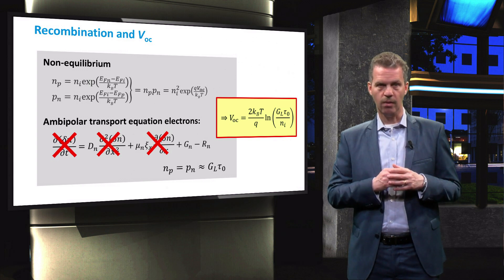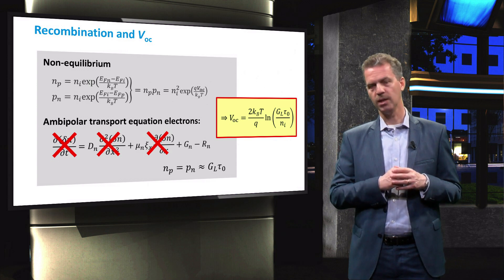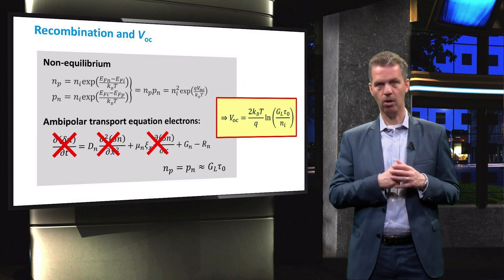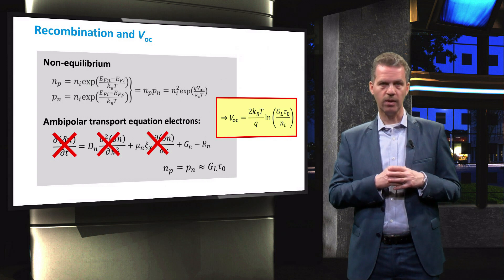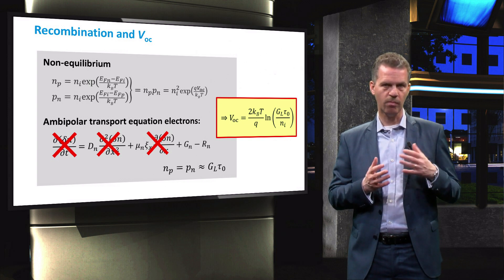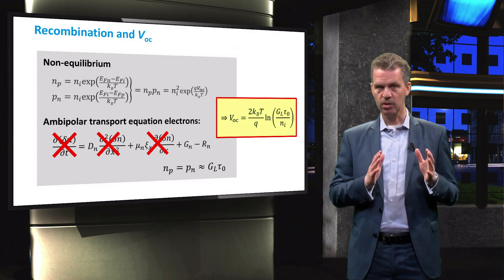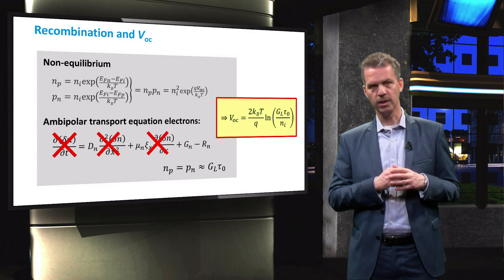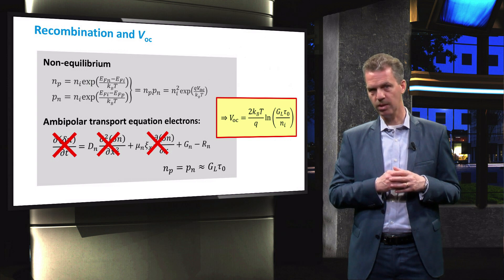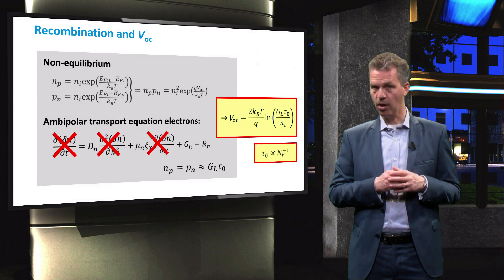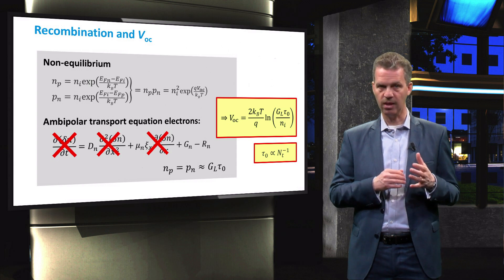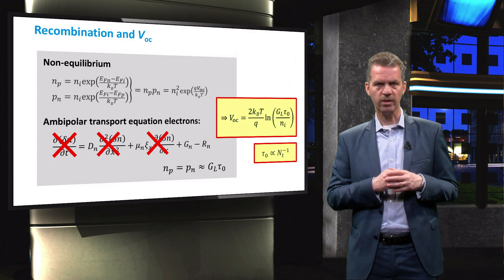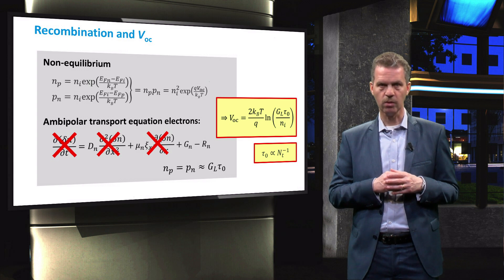We can distinguish three recombination processes: radiative, Shockley-Reed Hall or SRH, and Auger recombination. Radiative and Auger recombination depend on carrier densities and are determined by intrinsic material properties, so these cannot be influenced easily. SRH recombination, however, depends on the defect density in the material. As the carrier lifetime is inversely proportional to the trap density Nt, it is crucial to keep this value low. In this video, we will focus on lowering the SRH recombination rate.